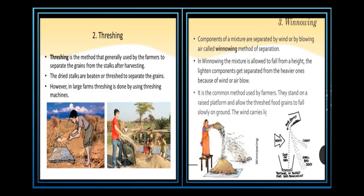Next is threshing and winnowing. Threshing is the method generally used by farmers to separate grains from stalks after harvesting. The process of separating grains from the stalks of harvested crops — either by beating the stalks against a hard surface or by using a threshing machine — is called threshing. In large farms, threshing is done using a threshing machine.